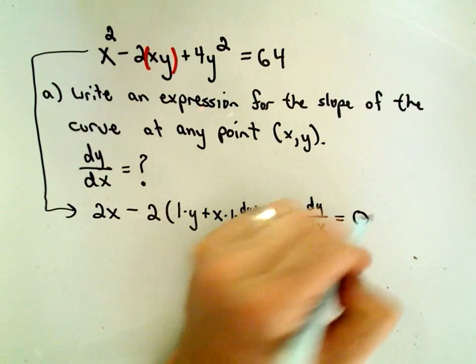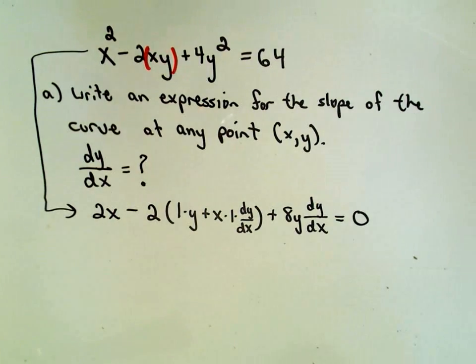So then the derivative of 4y squared will simply be 8y dy/dx. And the derivative of 64 on the right, that's a constant, that's just 0. So at this point, we just need to solve for dy/dx.